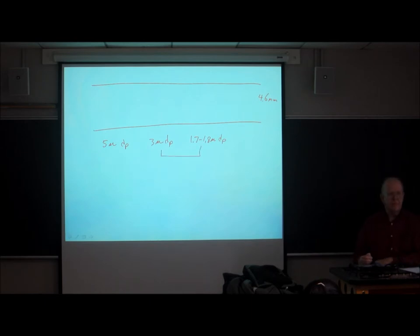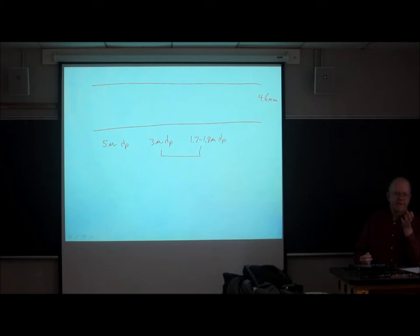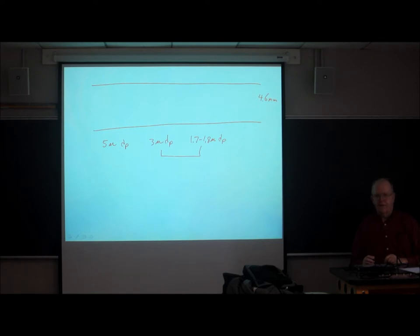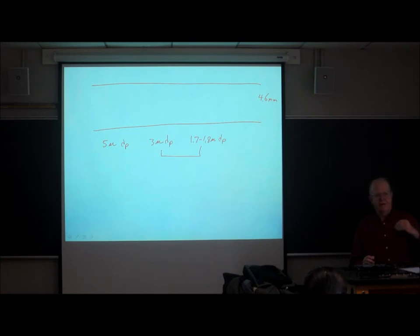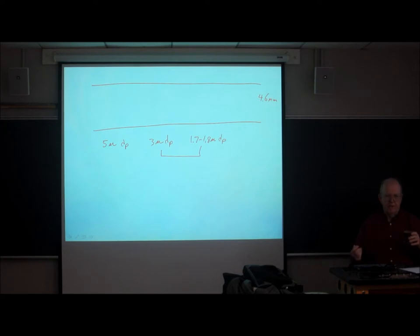Somewhere between 5 micron and sub-2-micron, we crossed a very serious boundary. The instrumentation available up to about 5 years ago had a pressure limit of about 5 to 6,000 PSI — roughly 400 bar. When the sub-2-micron barrier was breached, 400 bar just didn't cut it, and companies started introducing very high pressure systems on the order of 800, then 1,000, then 1,200 bar.